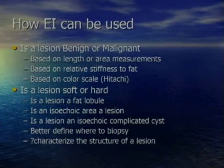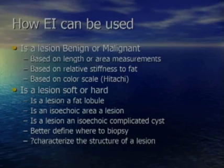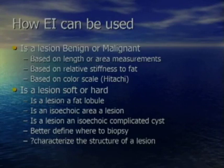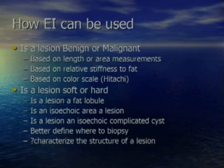Let me review how I use elasticity imaging in our breast care clinic. Most obviously, we can determine if a lesion is benign or malignant using length or area measurement, relative stiffness to fat, or a color scale like the Hitachi system. Additionally, we can use elastogram information to ask: Is the lesion really a fat lobule? Is there actually a lesion present in an isoechoic B-mode area? Is an isoechoic lesion really a complicated cyst? Can the elastogram help define where to biopsy? And does characteristic information within the elastogram provide histopathological clues?